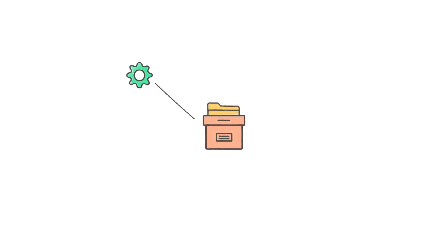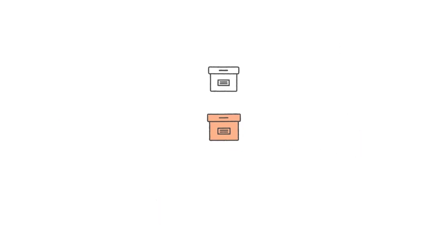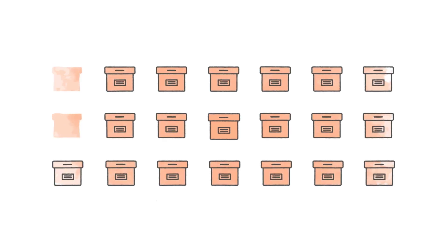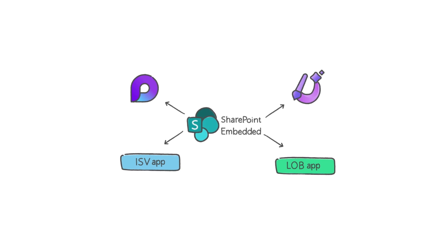Within SharePoint Embedded, a brand new capability is being introduced: file storage containers. These containers are designed to support your business processes and information and security architecture, whether you need to manage a few thousand documents or several million. SharePoint Embedded powers Microsoft products like Microsoft Loop and Designer, and it transforms how both enterprise and ISV apps deliver content management.